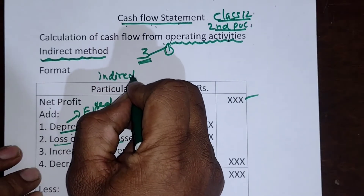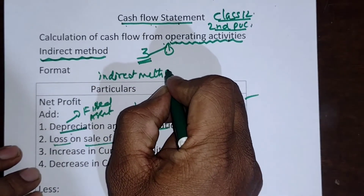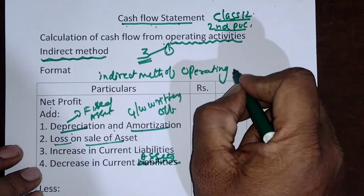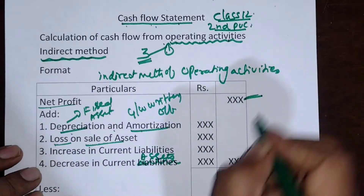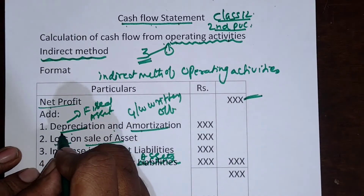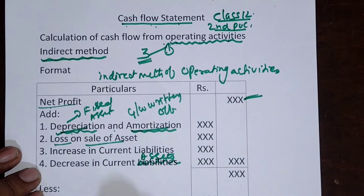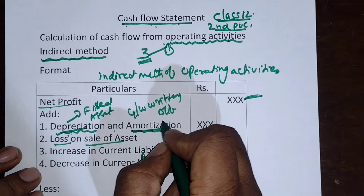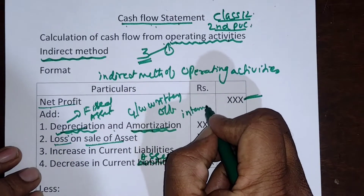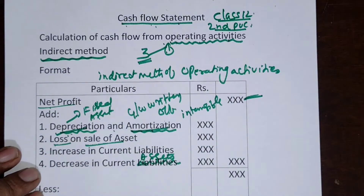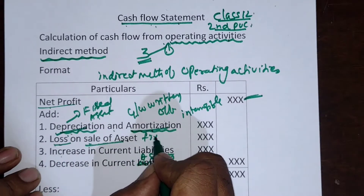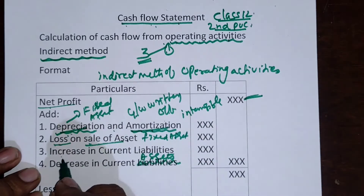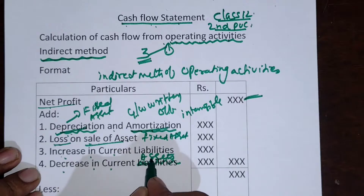The format is the indirect method of operating activities. The very first item we have to consider is the net profit, and with that net profit we add depreciation and amortization. Depreciation is calculated on the fixed asset, and amortization is the write-off of goodwill or any intangible asset. Next is the loss on sale of asset — fixed asset. And next is the increase in current liabilities and decrease in current assets.